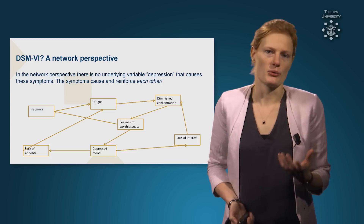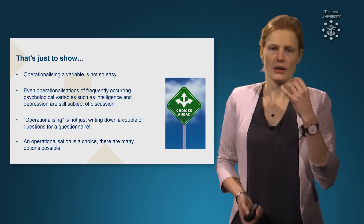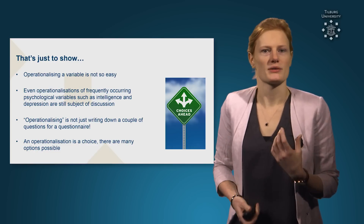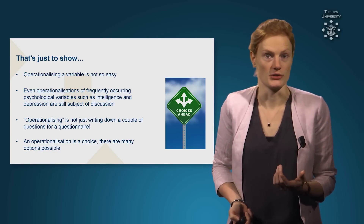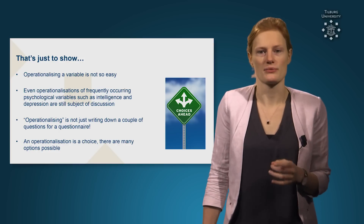This is just an example to show the following: if you want to operationalize a variable, it is very difficult in psychology. Even if we are talking about things that occur very often in psychological research — like intelligence and depression, as we just saw — it is very complicated to make a good decision about how you are going to measure something. It is still a subject of discussion in the scientific literature. Operationalizing — making a variable concrete — is not just writing down a couple of questions. It is a choice, and there might be many options possible, and this can lead to different things.